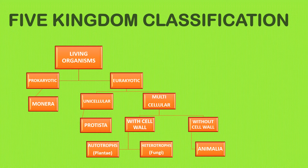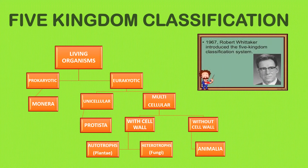The five kingdom system of classification was introduced by Robert Whittaker, a very famous scientist who did a lot of work to classify plants, animals, and living organisms.